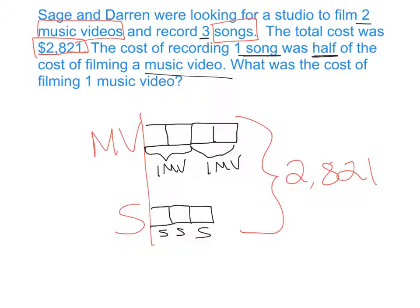Since we know our total, we can divide the total by the number of boxes we have to find out what each box is worth. Let's count how many boxes we have: one, two, three, four, five, six, seven boxes. And our total was $2,821.